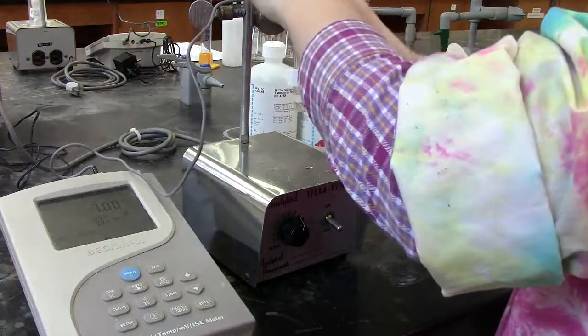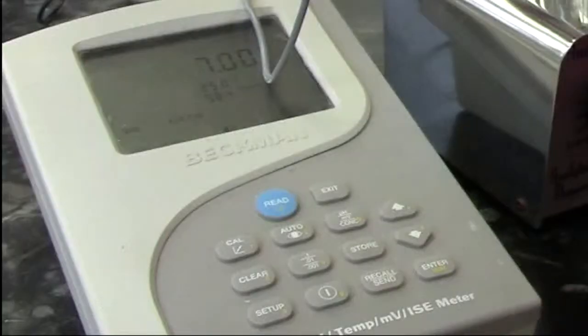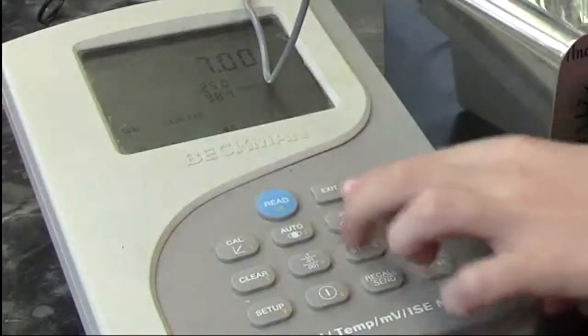In this case however, I'm going to immerse it in my unknown solution. I'm now ready to take the pH meter out of calibration mode. All I have to do is press exit.